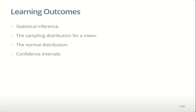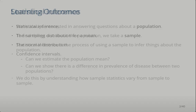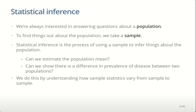We do that by knowing how statistics in the sample vary from sample to sample, which we looked at in lab four. We're going to look at the sampling distribution for a mean, show that it's a normal distribution, and then introduce the idea of a confidence interval, which is essentially a way to describe uncertainty.